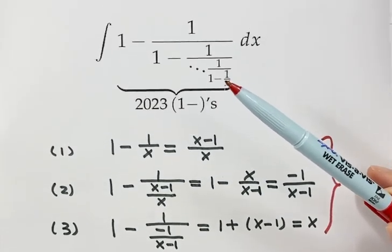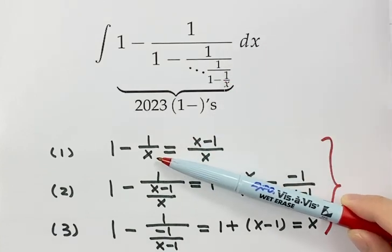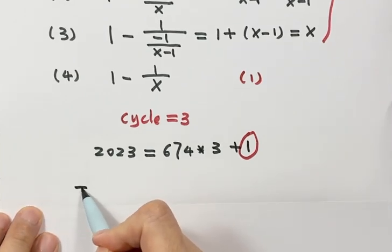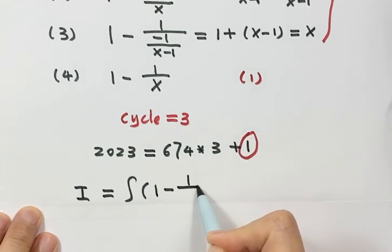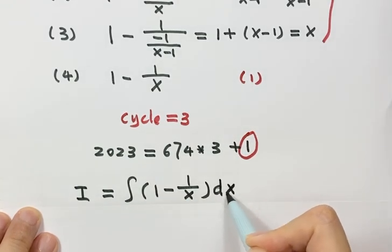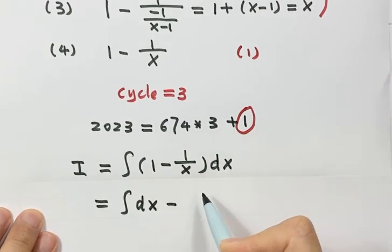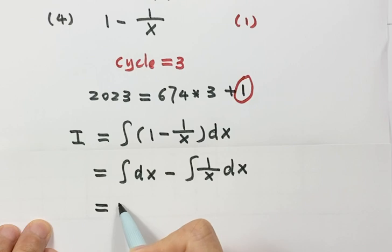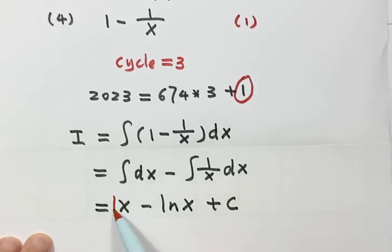So if we use I for this integral, that's equivalent to the integral of 1 minus 1 over x. Then we have this integral, 1 minus 1 over x dx. Then just separate them. And here just 1 over x dx. Then this is x, then this is natural log x, plus constant C. So this is the answer for this integral.